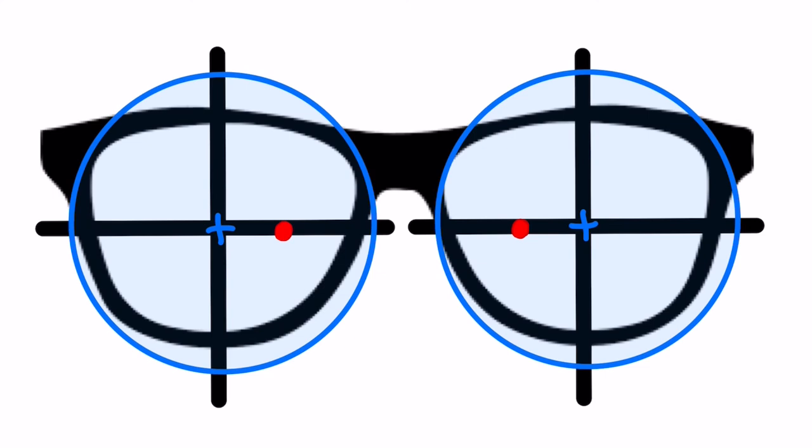Now that we know the amount of prism needed, we need to determine the base direction to make sure that the OC is decentered correctly on the blank. If this lens had been minus power, let's say a minus one,